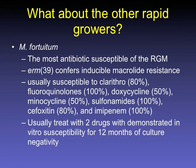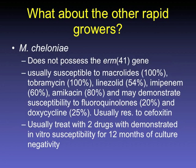For other rapid growers like M. fortuitum, this is the most antibiotic-susceptible rapid grower. It has inducible macrolide resistance but not as significant as ERM-41. Usually susceptible to macrolides and fluoroquinolones — treat with two drugs with demonstrated in vitro susceptibility for 12 months of culture negativity. M. cheloniae does not possess the ERM-41 gene, making it much more susceptible to treatment, with options including macrolides, tobramycin, linezolid, and imipenem.